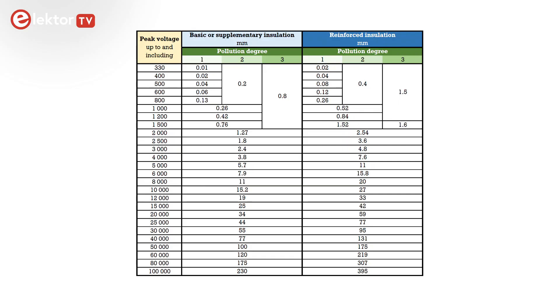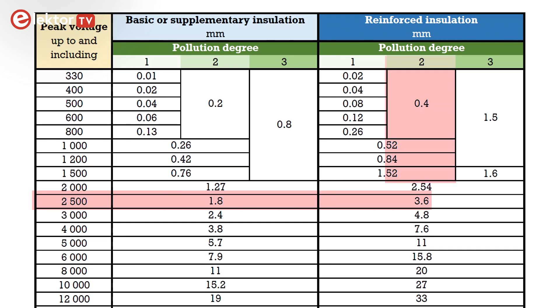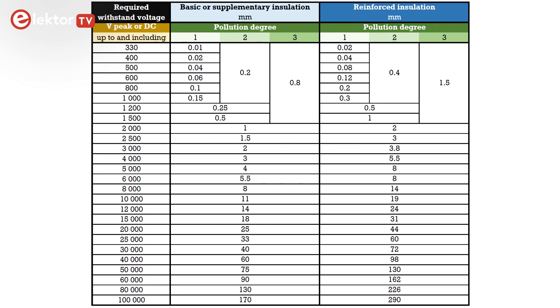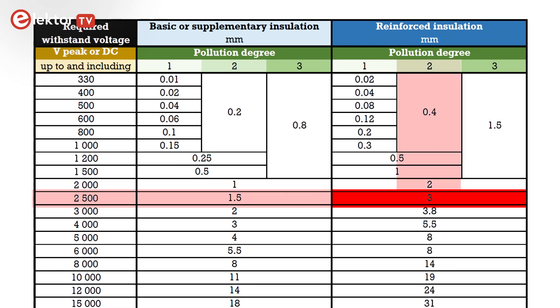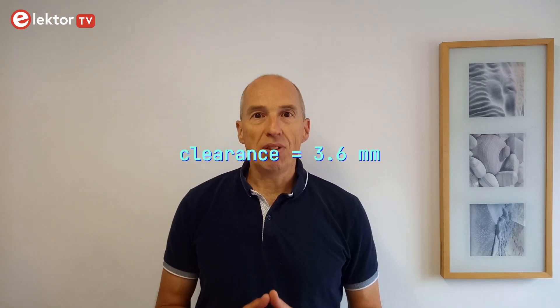To determine the clearance distance between the primary and secondary circuits there are two procedures, and you must take the highest value of the two. Procedure 1 uses Table 10 in my draft document and we find 3.6 mm for our values. Procedure 2 uses Table 14 and there we find 3 mm. Why the two values are different is unclear to me, but we must use the highest value of the two, so we continue with 3.6 mm.